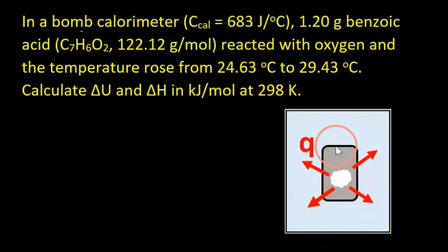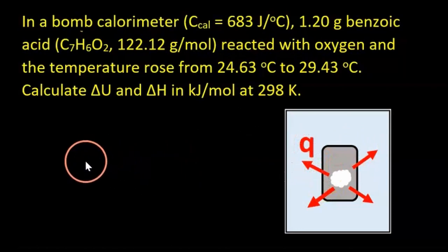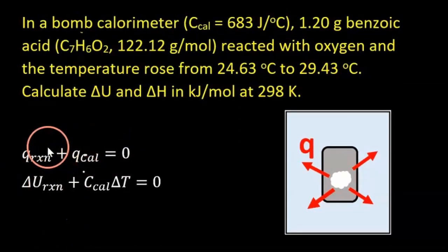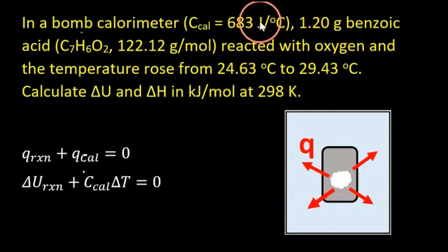A bomb calorimeter is an insulated container usually filled with water, with the bomb — a steel container — inside. It's under constant volume since the steel container can't expand. When we burn the benzoic acid, energy is released as heat, the calorimeter heats up, and we measure that temperature change. Because this is calorimetry, we start with the sum of heat transfers equals zero: heat of the reaction plus heat of the calorimeter equals zero. Under constant volume, the heat of the reaction equals the change in internal energy.